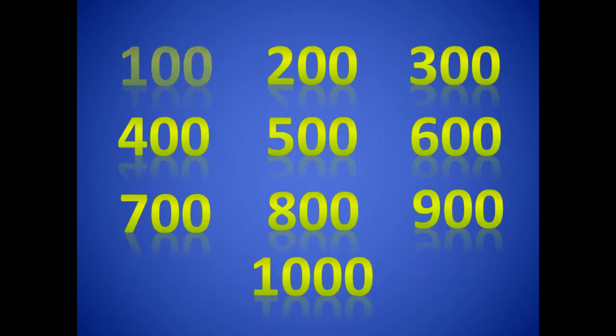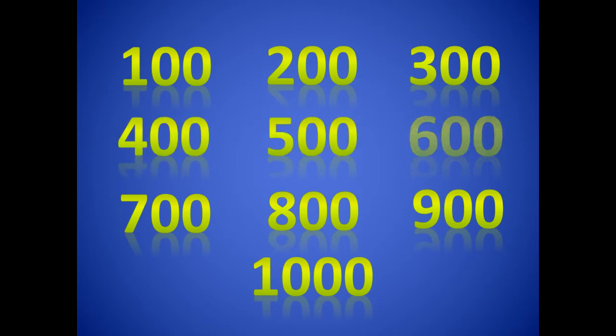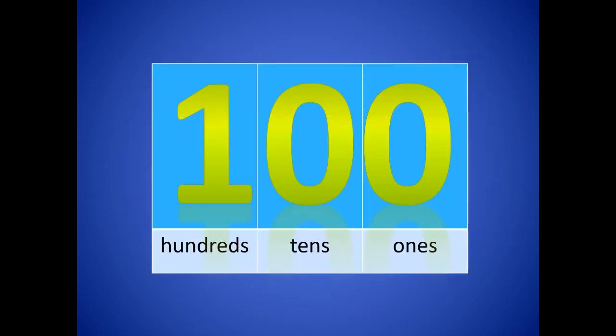100, 200, 300, 400, 500, 600, 700, 800, 900, 1,000. When we're skip counting by 100, we're not counting by ones and we're not counting by tens.